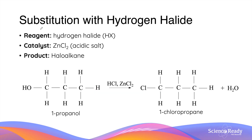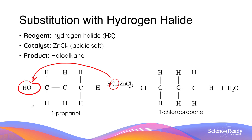The next reaction is substitution with hydrogen halide. As the name suggests, in this reaction, by adding hydrogen halide to an alcohol group, the halogen atom is able to replace and substitute the alcohol functional group in the alcohol molecule. This reaction requires the presence of an acidic salt as a catalyst — commonly, zinc chloride. In this example, the substitution reaction between 1-propanol and hydrogen chloride produces 1-chloropropane and a water molecule.